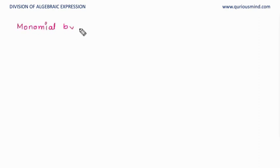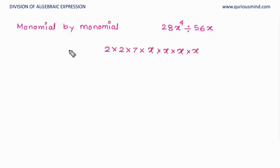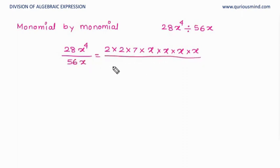Let's first divide a monomial by another monomial: 28x raised to 4 divided by 56x. I first write the irreducible factors of 28x⁴ over 56x.